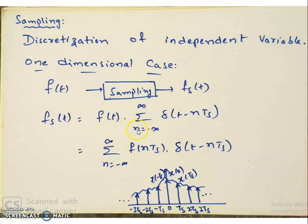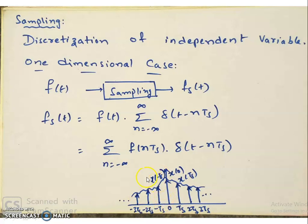Fs of t is equal to F of t multiplied with summation over n equal to minus infinite to infinite, delta of t minus n·ts. This multiplication of F of t with the impulse train will result in summation over n equal to minus infinite to infinite, F of n·ts multiplied with delta of t minus n·ts. The impulse train gets modulated with the value of F of t. This is F of minus ts, this is F of 0, this is F of ts.